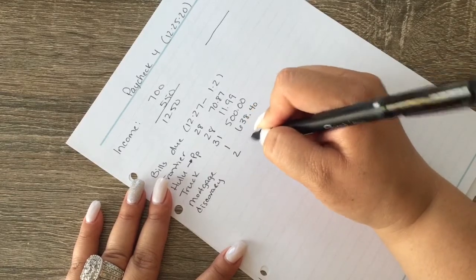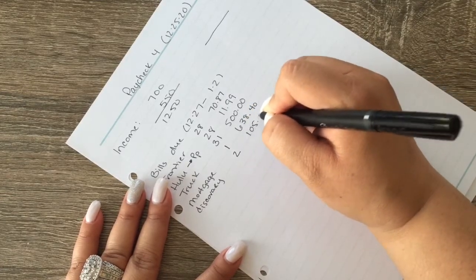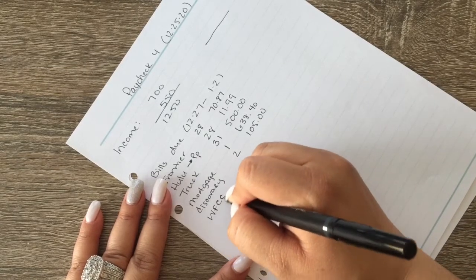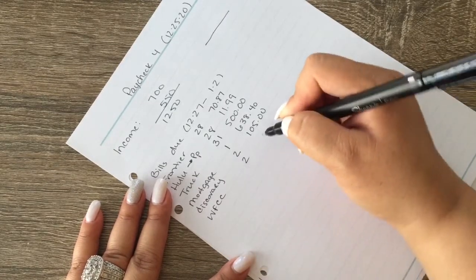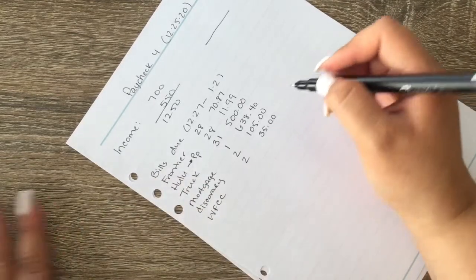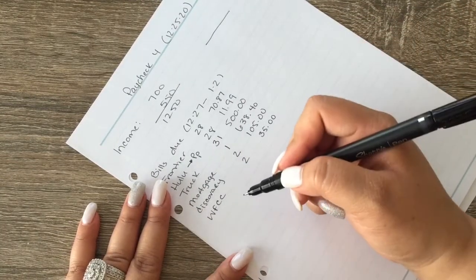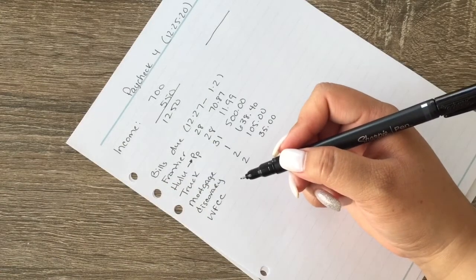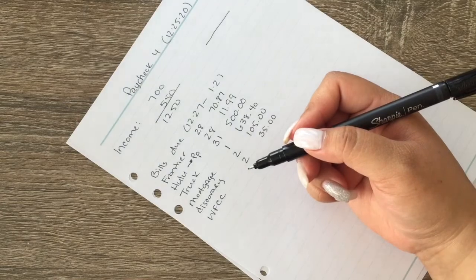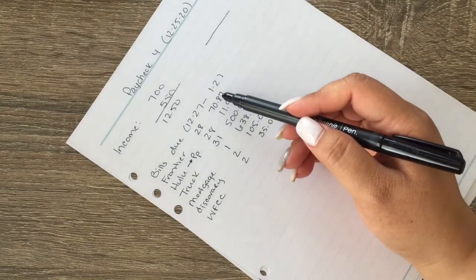So our Discovery is due on the second and that is $105. Wells Fargo credit card is also due on the second and that is $35. And that should be everything. Let me look. Yes, so on the third or like on the check that we get on the first, we'll pay everything else.